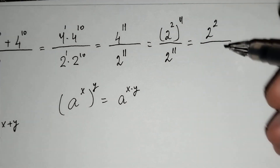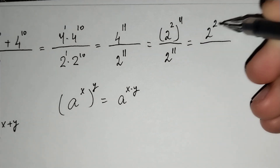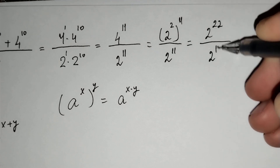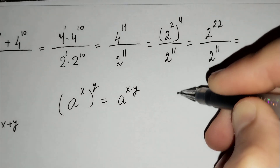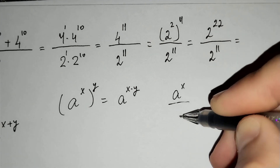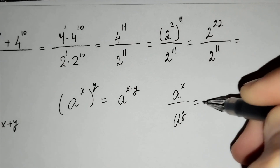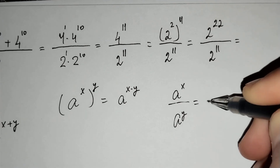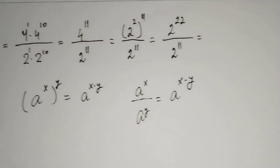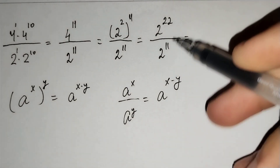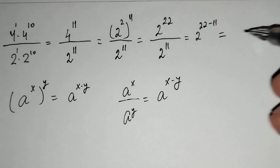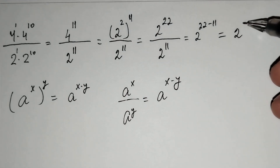Here, 2 power 2 times 11 equals 2 power 22, over 2 power 11. And since a power x over a power y equals a power x minus y, we get 2 power 22 minus 11, which equals 2 power 11.